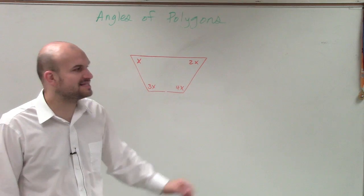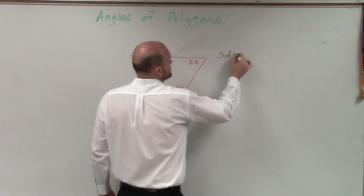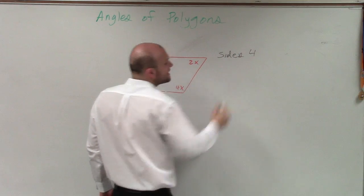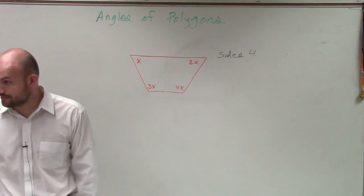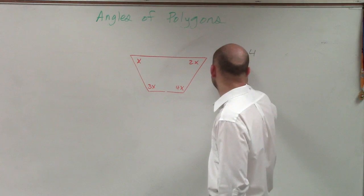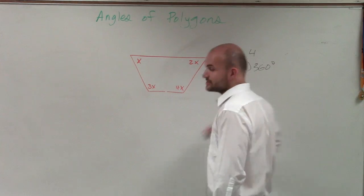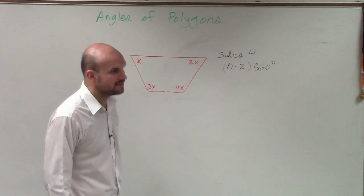Now, looking at that polygon, how many sides does it have? 4. So since it has four sides, by using our interior angle sum theorem, we can say that the number of degree measures in here is going to be n minus 2 times 360 degrees, right? That's the sum of the interior angles.